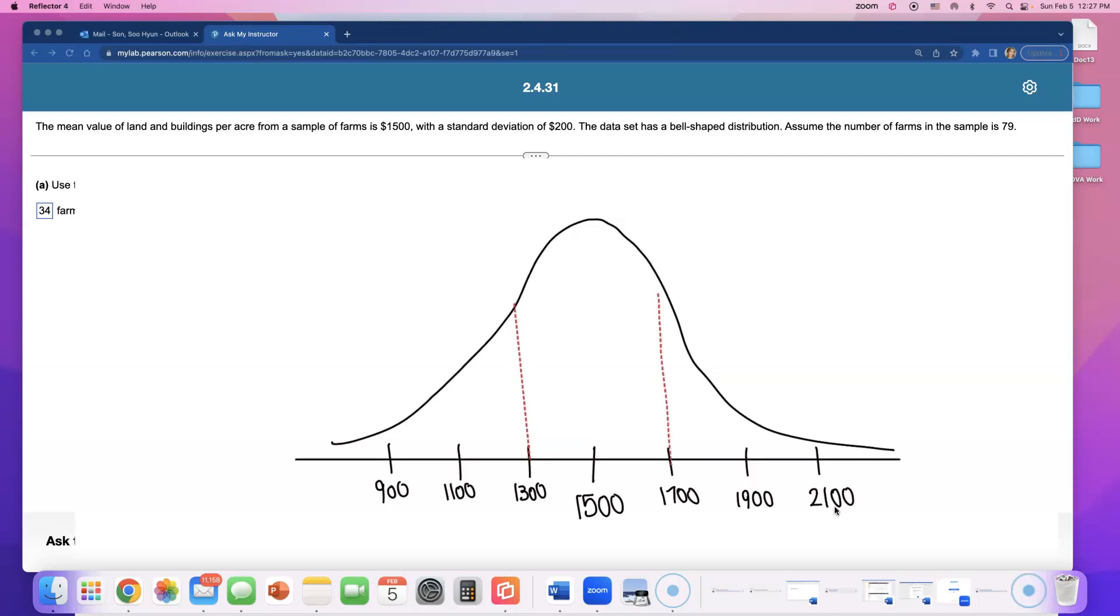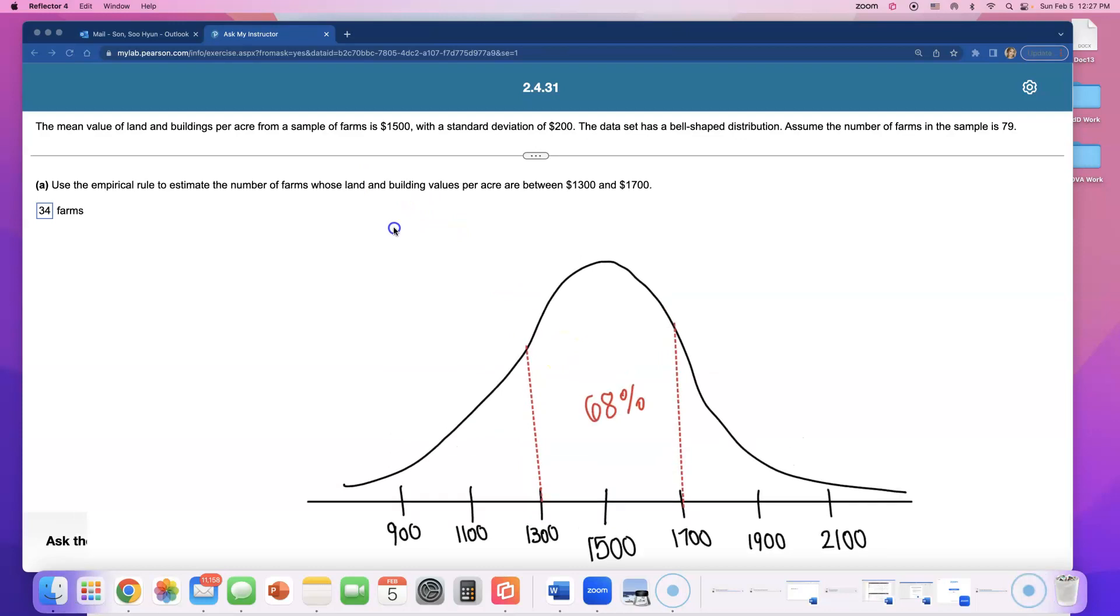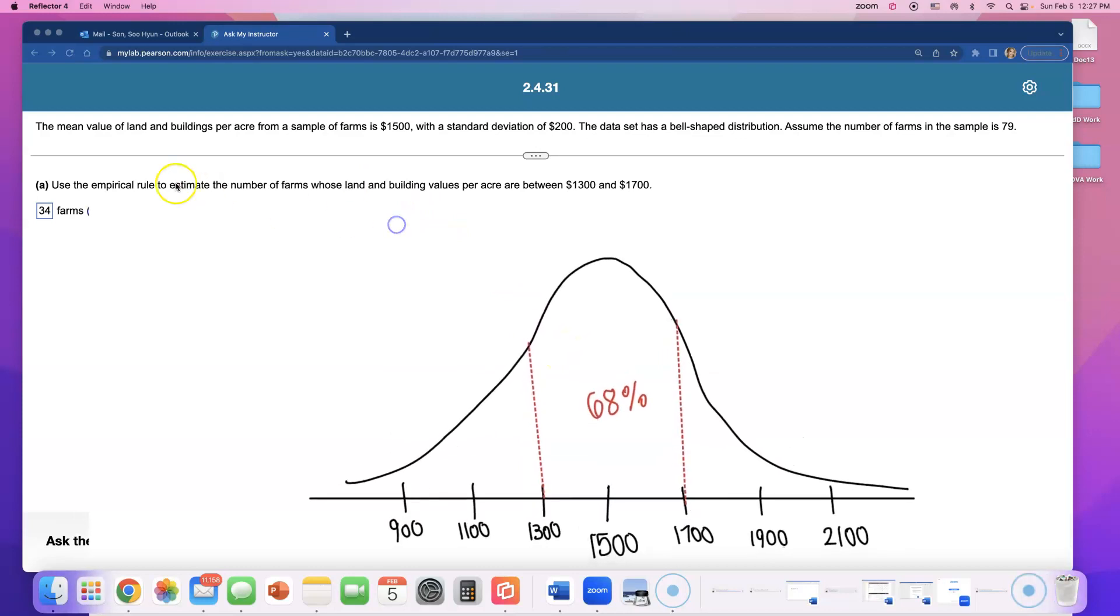This is what the empirical rule is talking about. Within one standard deviation, so from 1300 to 1700, there lies 68% of the data. I think I said the wrong number, but yes, in between 1300 and 1700 there lives 68% of the data. Part A is asking for between 1300 and 1700, so we know the percentage they want is 68%.